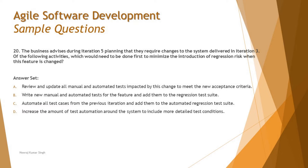Option B says: write new manual and automated tests for the feature and add them to the regression test suite. However, this would not be the initial task. First is analysis; after analysis, if additional test cases are needed, you write them. A tester would not know what new tests are required without reviewing the current set first. Also, existing test cases may already cover the changed feature.